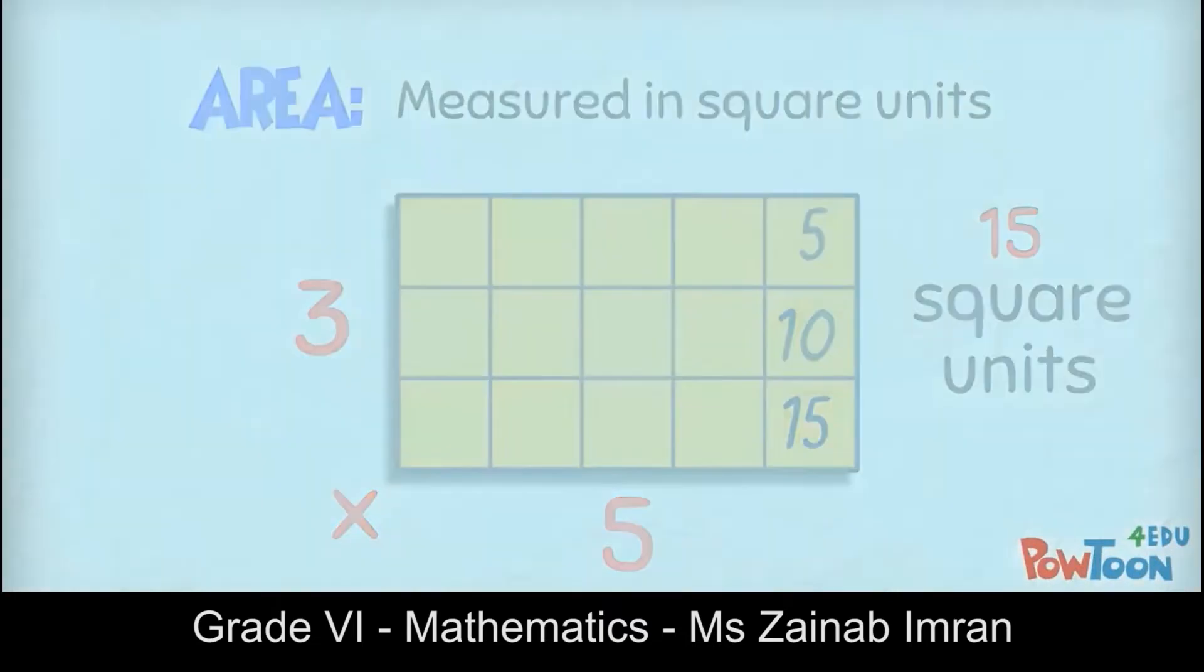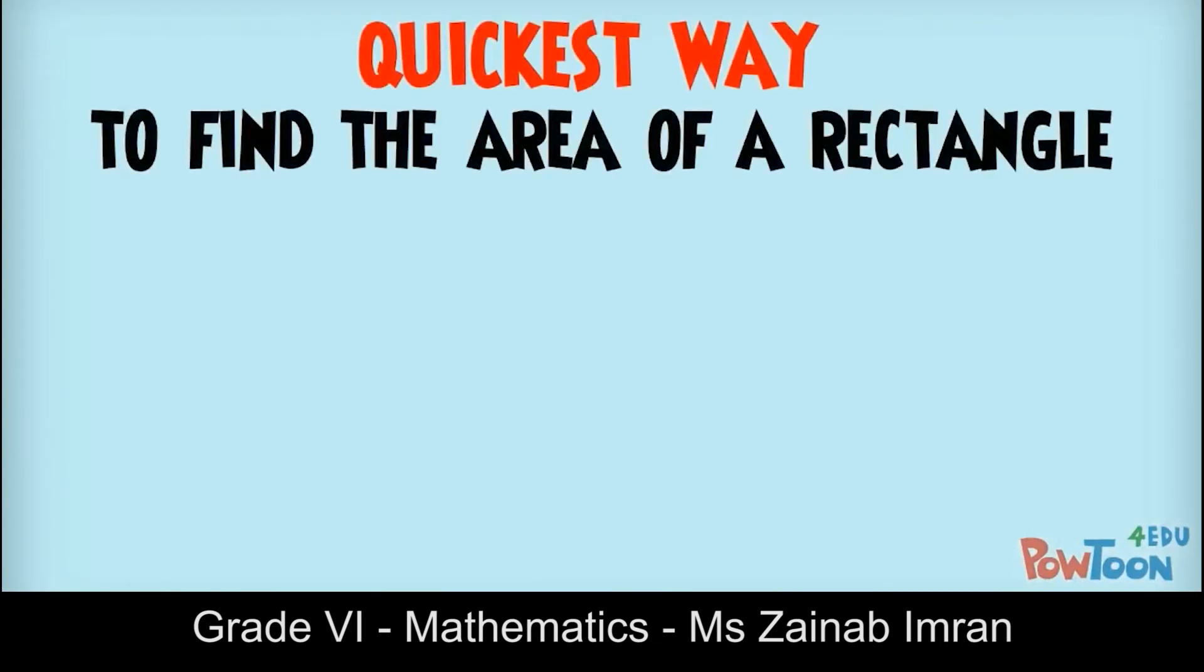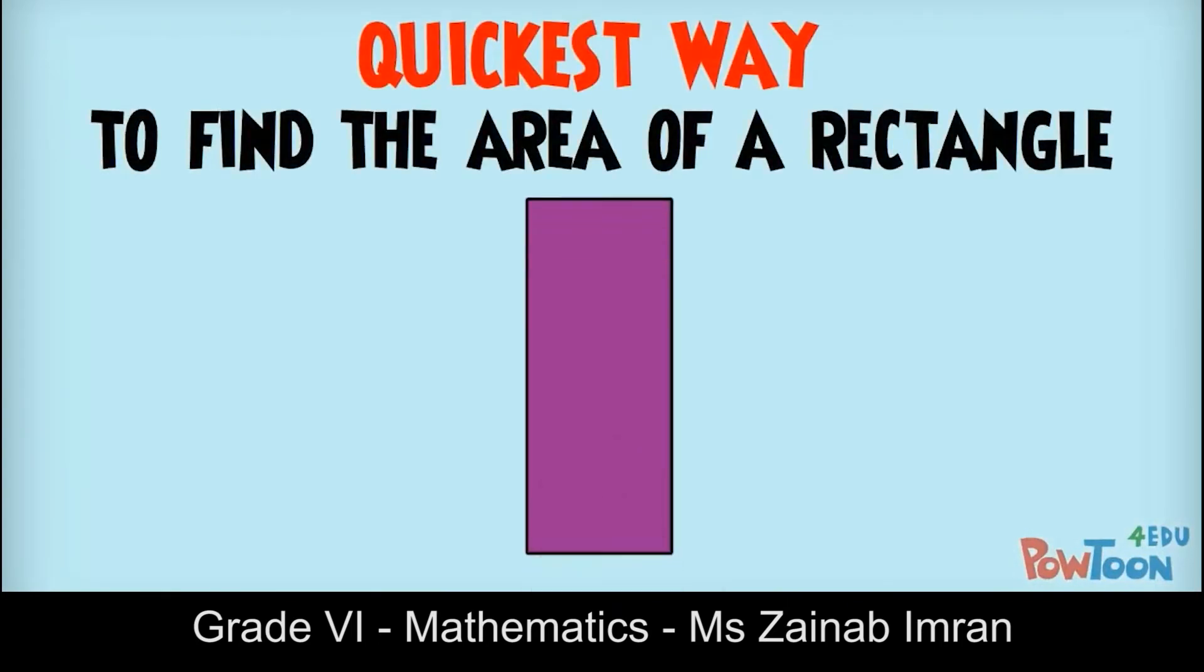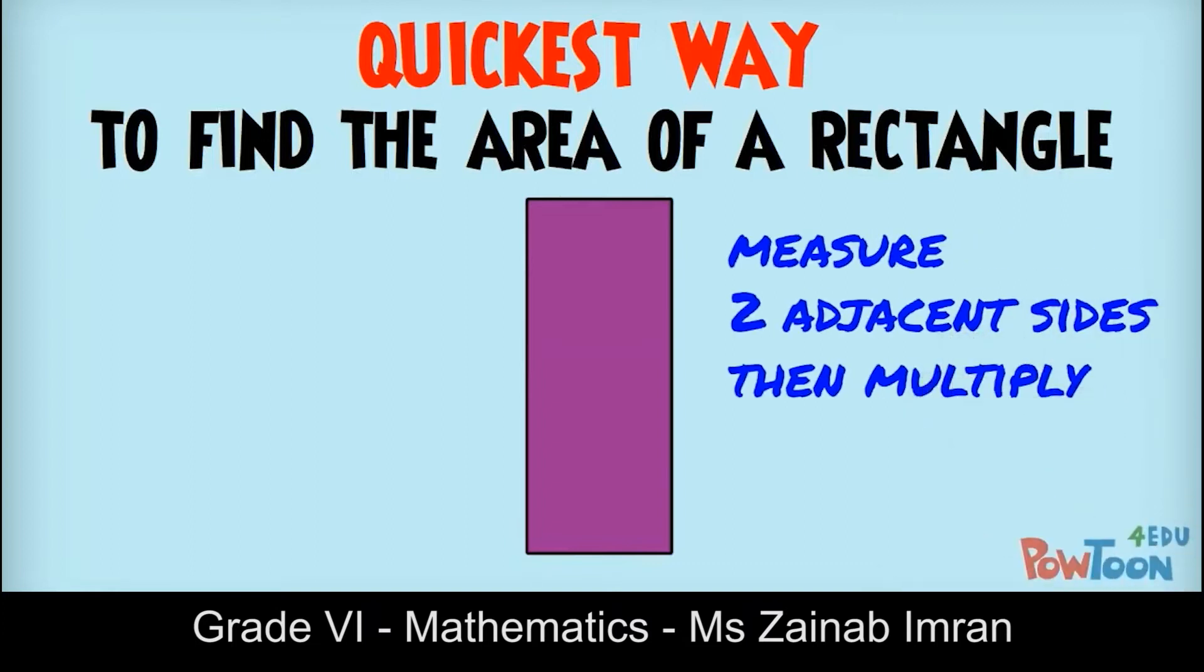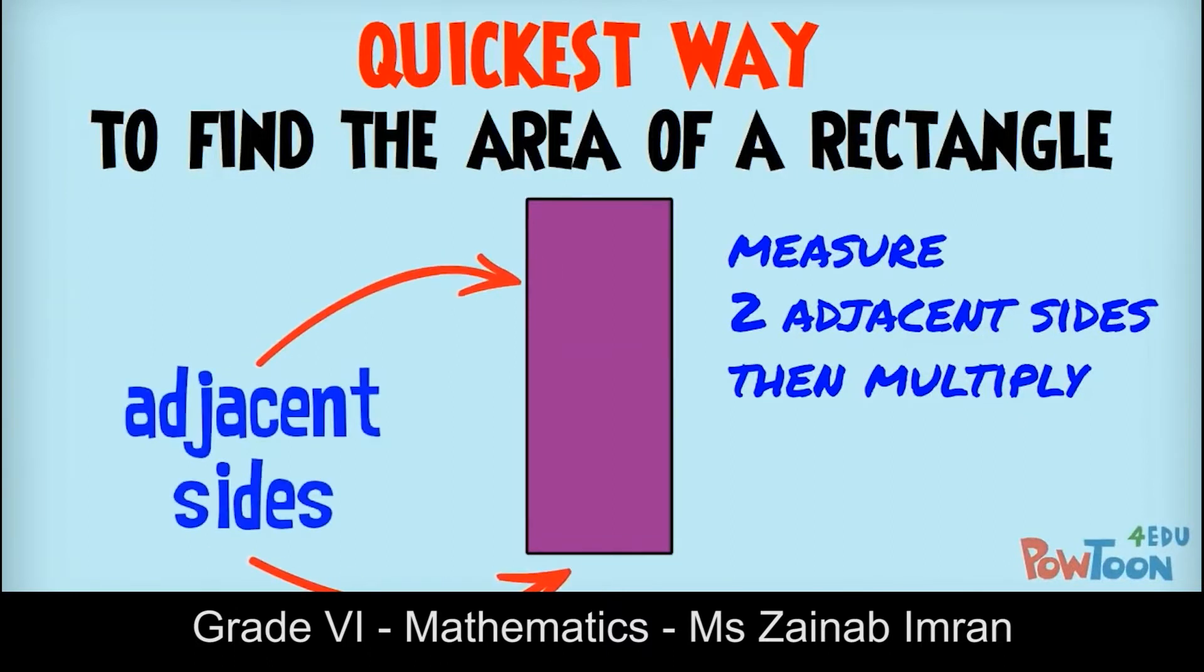The quickest way of finding the area of a rectangle is to measure two adjacent sides and multiply those numbers. These sides are next to each other, so they're adjacent. We call them length and width. So the area of a rectangle is length times width.